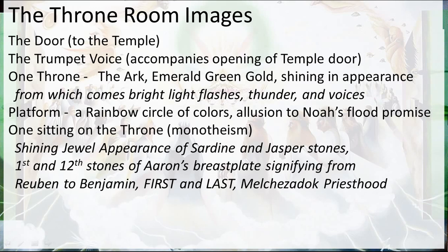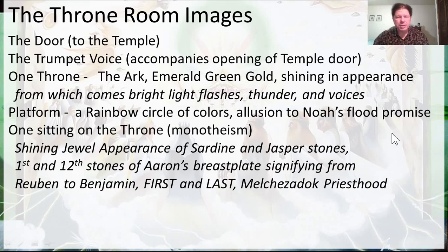The one sitting on the throne initially has a shining jewel appearance of sardine and jasper stones — this is most likely what Peter, James, and John saw on the Mount of Transfiguration. The sardine and jasper stones are the first and the twelfth stones of Aaron's breastplate. This breastplate only has two stones, signifying he's in charge from Reuben to Benjamin — the first and the last. What we're seeing here is a Melchizedek priest sitting on this throne. This is Jesus the Melchizedek priest.